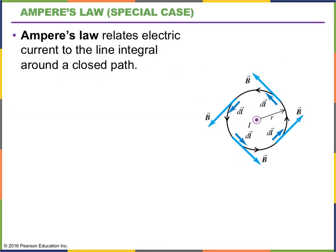Let's get going with the new material: Ampere's law. Ampere's law has to do with an integral of the magnetic field dotted with a displacement. In this picture, we have a long wire of current coming out of the page, and we know that wire makes a magnetic field that forms circles around it. We're going to integrate around that circle, putting a closed-path symbol on our integral. Everywhere on the circle, the magnetic field is tangent to the circle, so as we go around, the magnetic field and our dl are parallel to each other.